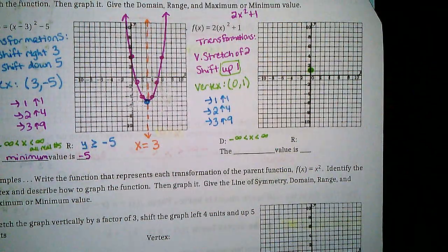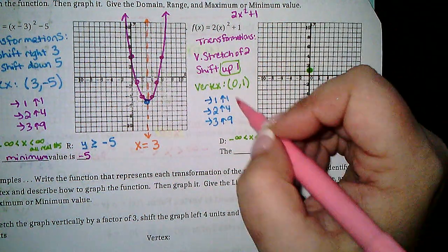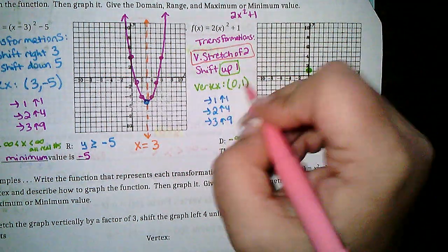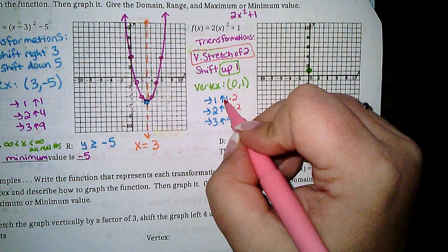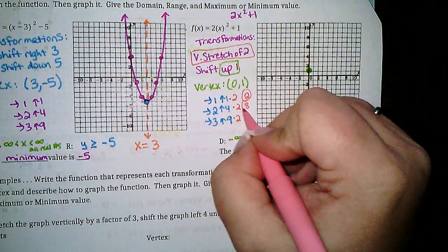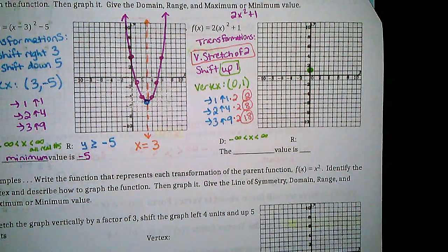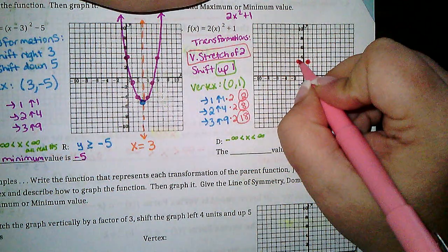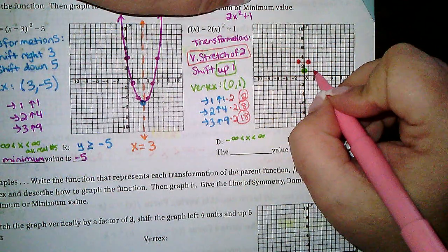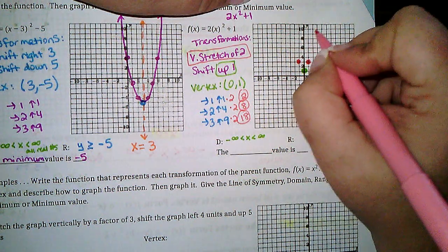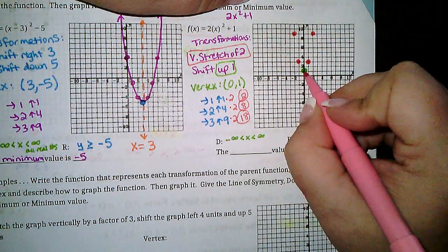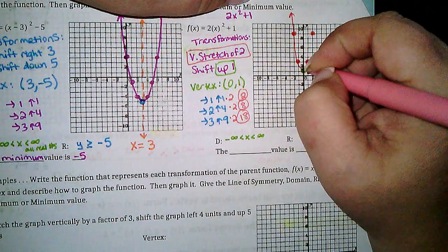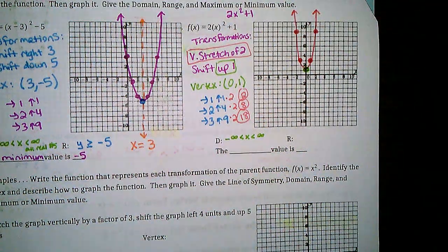This pattern gets changed if I have a stretch, compression, or reflection. I have a stretch of 2, so that's going to multiply all the ups by 2: instead of up 1 I go up 2, instead of up 4 I go up 8, and instead of up 9 I go up 18. So if I go over 1 I need to go up 2 on both sides — back to the vertex for counting. Over 2 up 8 on both sides. Going back to the vertex, if I go over 3 I'm definitely not going to get up 18 on here, so we'll just use these points.